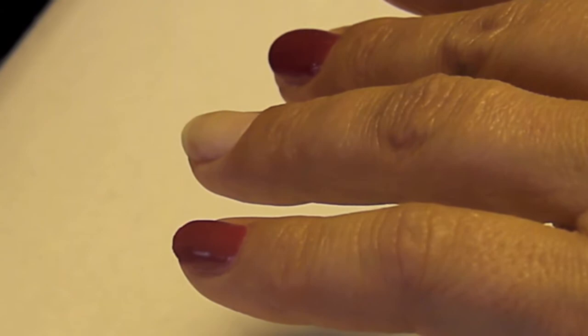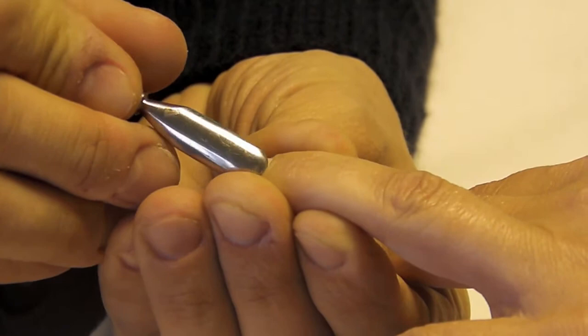Now I'm going to show you how to apply gel polish on the natural nail. We push gently the cuticle just a little bit around.